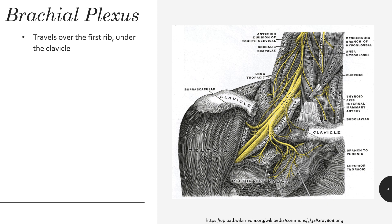An interscalene block provides great coverage to the upper arm and shoulder, but misses the ulnar distribution and isn't great for the lower arm. Traveling down to just above the clavicle, you can see why a supraclavicular block may not work well for the shoulder — because the suprascapular nerve, which provides innervation to the shoulder, is branching off and is often not captured at the level of the trunks. The divisions occur behind the clavicle, and the cords emerge below where you'd perform an infraclavicular block.